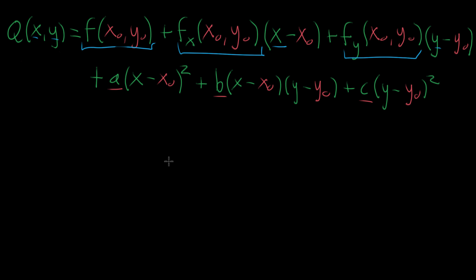So in the last video, I set up the scaffolding for the quadratic approximation, which I'm calling Q, of an arbitrary two-variable function, which I'm calling F. The form we have right now looks like quite a lot — we have six different terms. The first three were basically stolen from the local linearization formula, and then these next three terms are the quadratic parts.